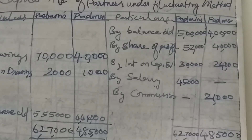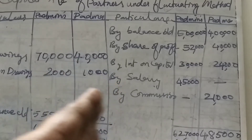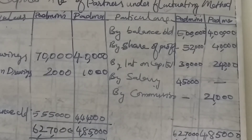What is the difference between fluctuating method and fixed method? In fixed method, we are preparing two accounts: capital account and current account. In fluctuating method, we are preparing only one account — that is the capital account of partners. We are entering all the items here: all the drawings, interest on drawings on the debit side; credit side: share of profit, interest on capital, salary, commission. Finding out the balance, you will get the capital account balance.